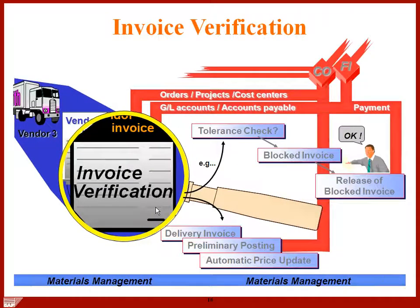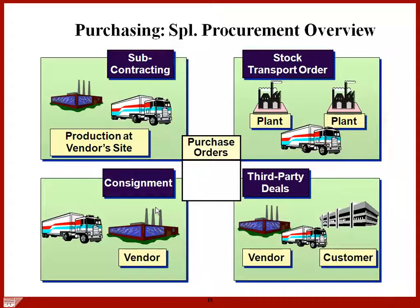Then there is invoice verification — once the vendor delivers material, you post the invoice. We discuss what things you check while posting, how to verify them, tolerances, invoice blocks, how to avoid blocks, and how to release blocks. After that, there is a special procurement chapter covering five special procurement types: consignment, subcontracting, pipeline, third-party sales order processing, and stock transport order.